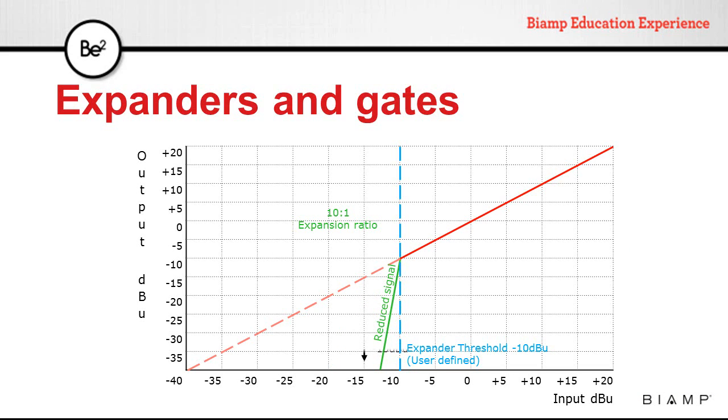At a ratio of 10 to 1, a minus 15 dB input will give us a minus 50 dB output.